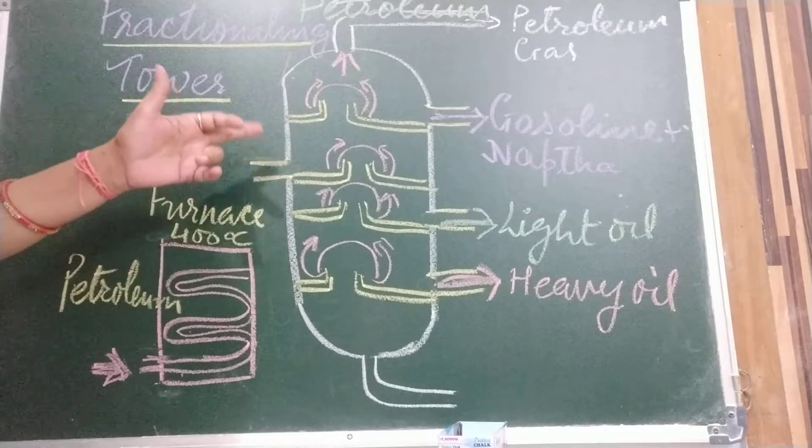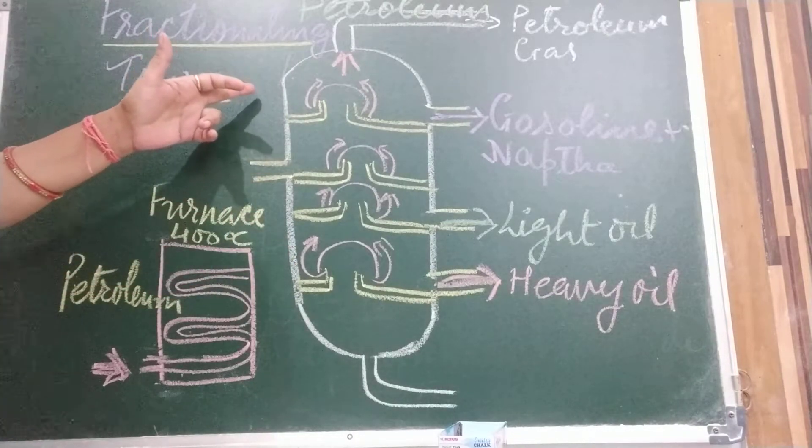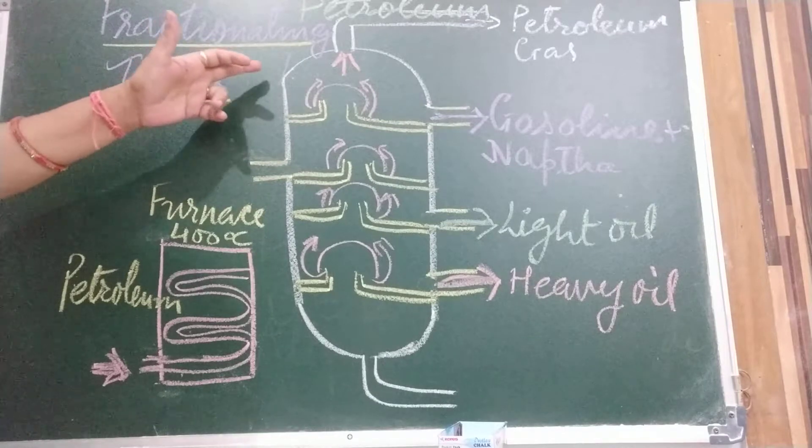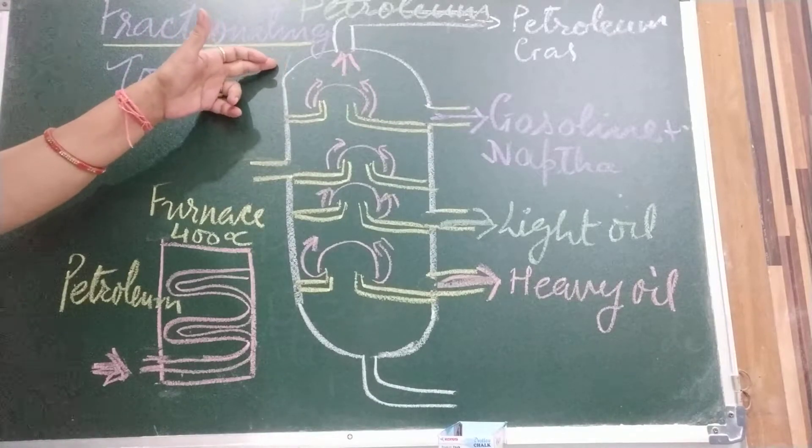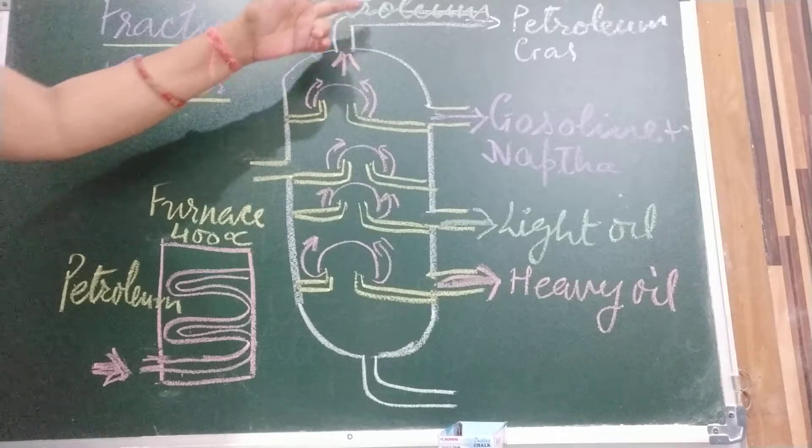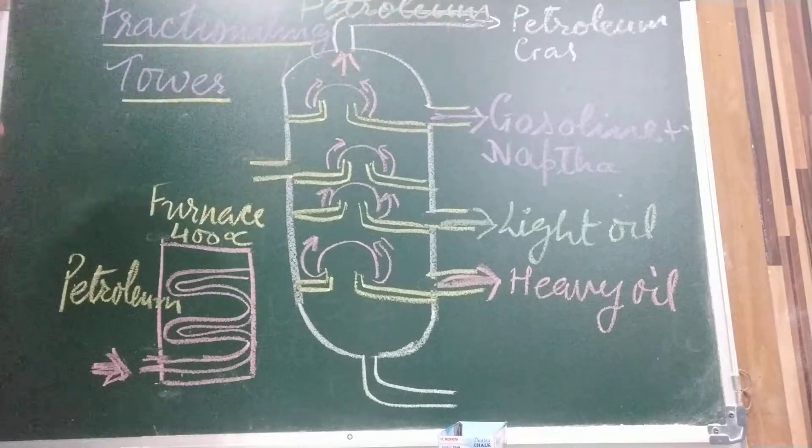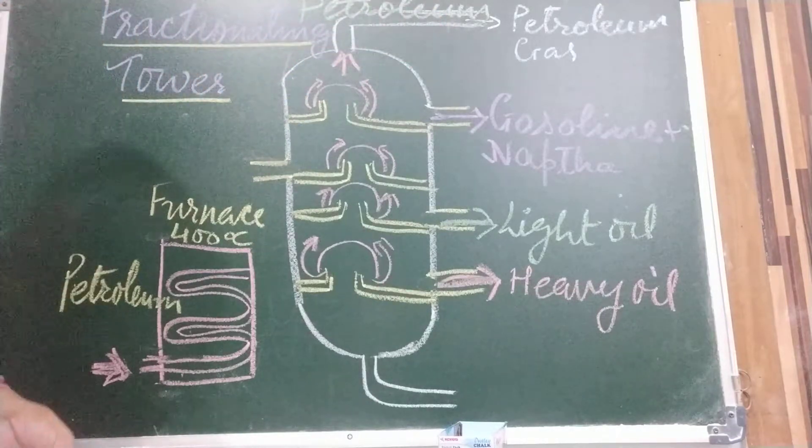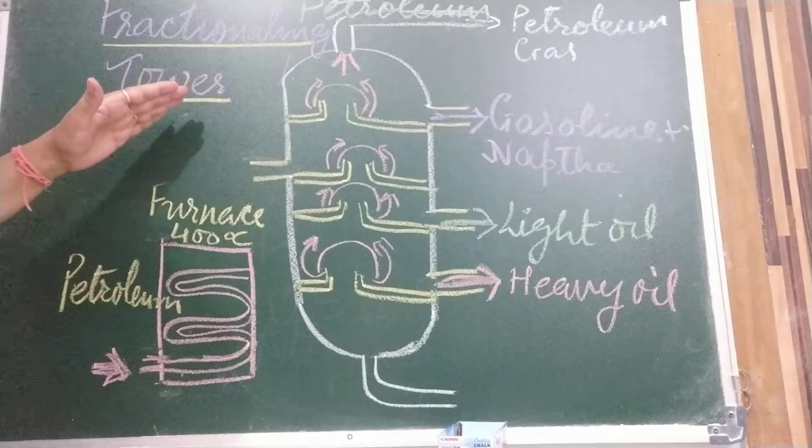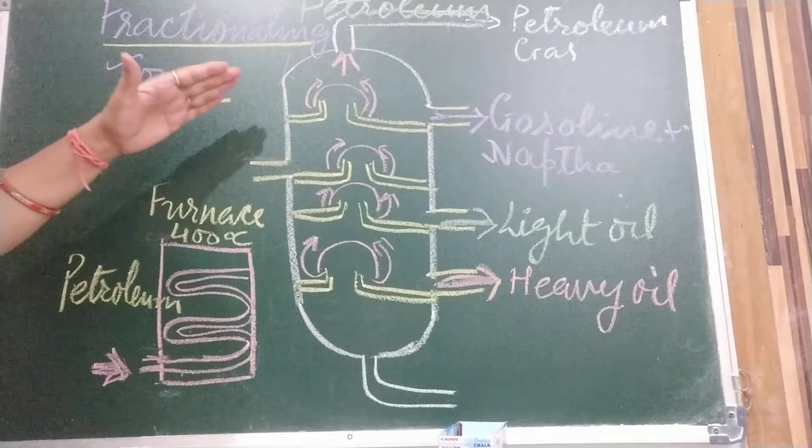The hydrocarbon with 1 to 4 carbon atom which are gases do not condense and escape from the top of the tar. And we call that petroleum gas. Some important petroleum fraction and their uses I am going to discuss.